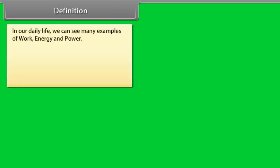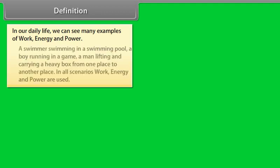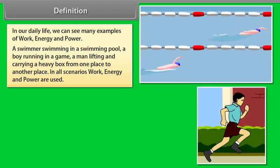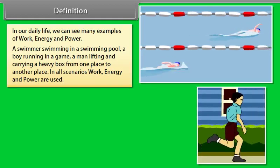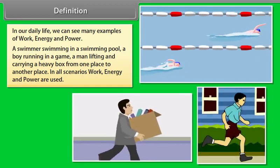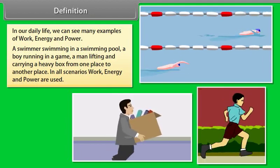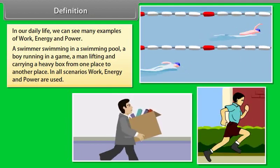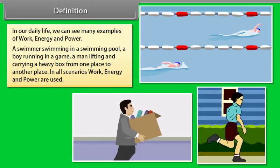Definition. In our daily life, we can see many examples of work, energy and power. A swimmer swimming in a swimming pool, a boy running in a game, a man lifting and carrying a heavy box from one place to another place. In all scenarios, work, energy and power are used.